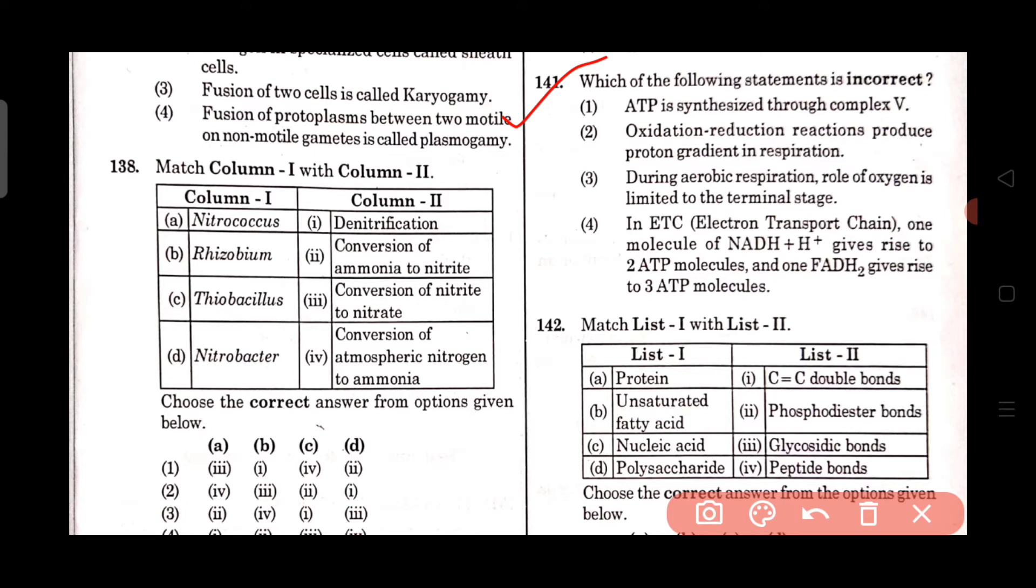Question number 141: Which of the following statements is incorrect? ATP is synthesized through complex V, this is correct. Oxidation reduction reactions produce proton gradient in respiration, this is also correct. During aerobic respiration, role of oxygen is limited to the terminal stage, this is also correct. In ETC electron transport chain, one molecule of NADH + H+ gives rise to two ATP molecules and one FADH2 gives rise to three ATP molecules.